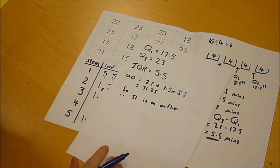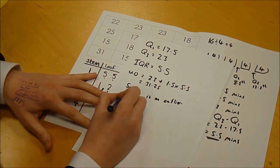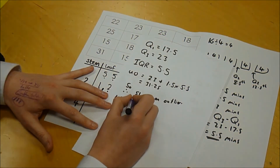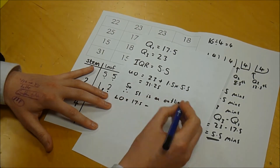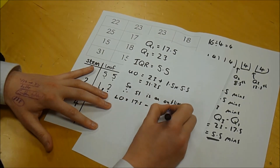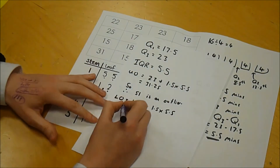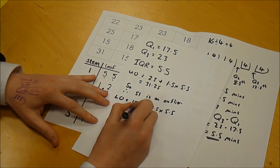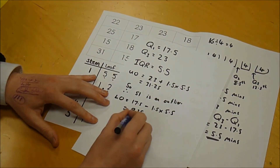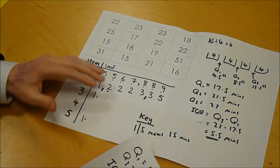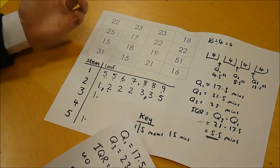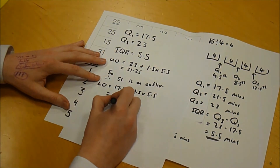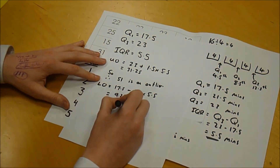For the lower bound of outliers, we start with the lower quartile and take off 1.5 times the interquartile range. Typing that in the calculator gives 9.25. Looking back at the data — everything's above that, so there's nothing we're going to class as a lower outlier.